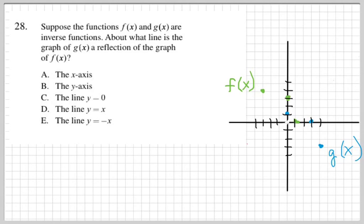Suppose the functions f of x and g of x are inverse functions. About what line is the graph of g of x a reflection of the graph of f of x? So I've done a visual over here on the right to help us understand this.